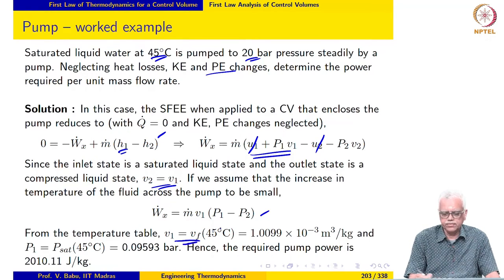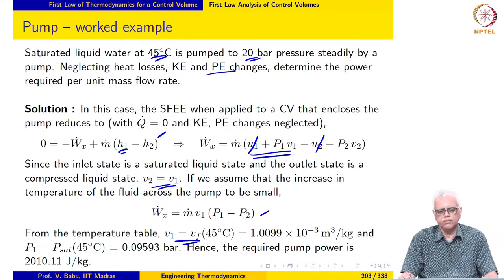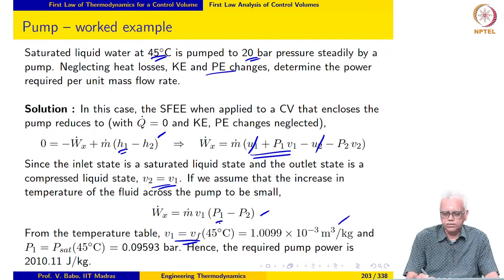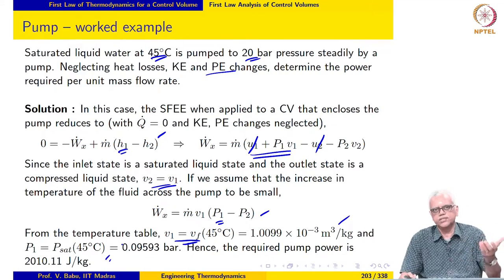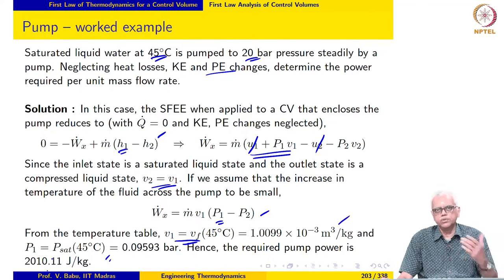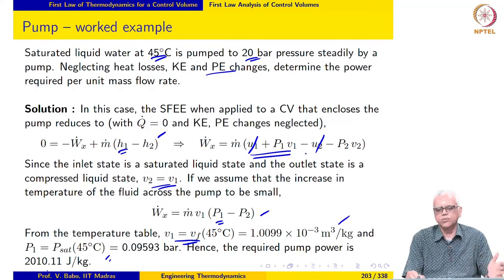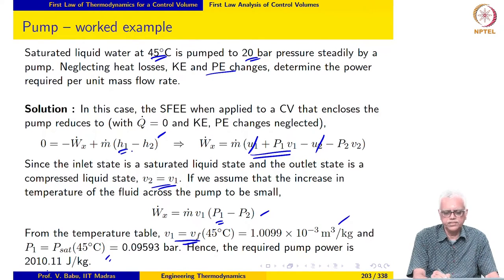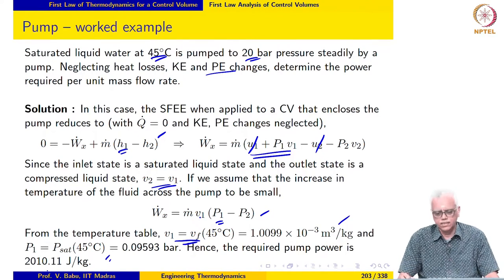V1 is Vf at 45 degrees Celsius because it is given that the liquid water is saturated at 45 degrees Celsius. P1 is equal to Psat at 45 degrees Celsius because it is a saturated liquid — that is also given. Substituting these values into the expression, we get the pump power to be 2010.11 watts per unit mass flow rate. Notice how we used the fact that it is an incompressible liquid to simplify the expression and write it in terms of pressure rise while keeping the density constant.